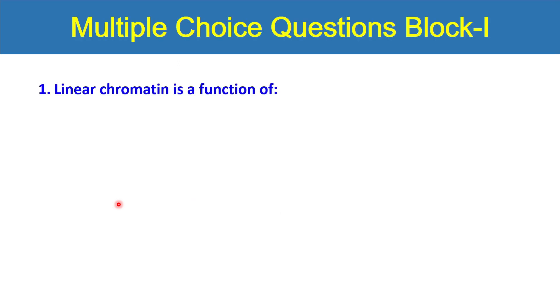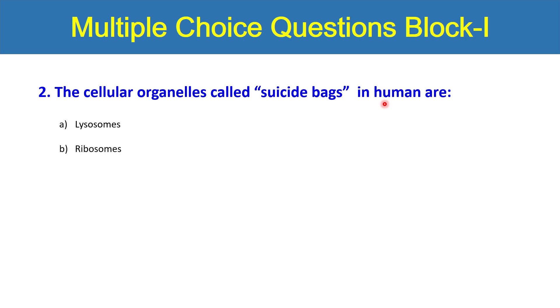Question number one: linear chromatin is a function of nucleus, mitochondria, cytoplasm, Golgi apparatus or lysosomes? Please write down the answers on the paper using pencils. Question number two: the cellular organelles called suicide bags in human or eukaryotic cells are lysosomes, ribosomes, exosomes, ketone bodies or glyoxysomes?